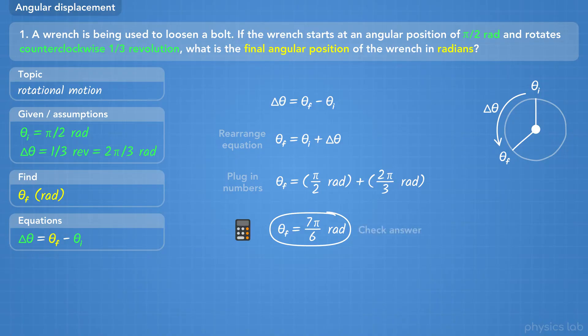That seems right. We started at a positive angular position, then rotated counterclockwise, so we added a positive value. We should end up with a positive angle greater than pi over 2 radians.